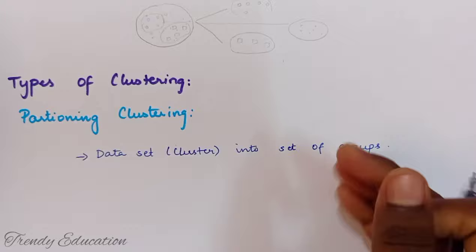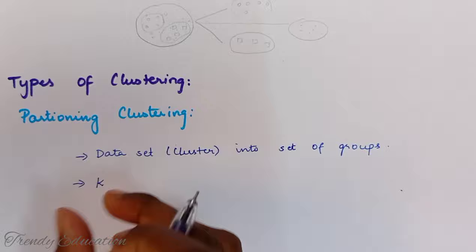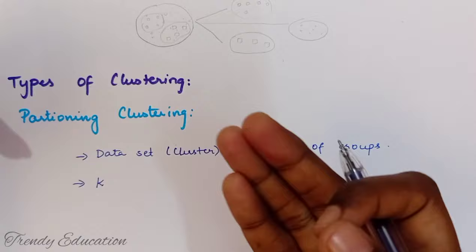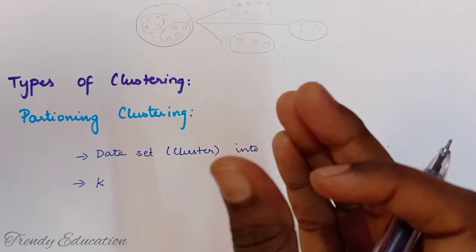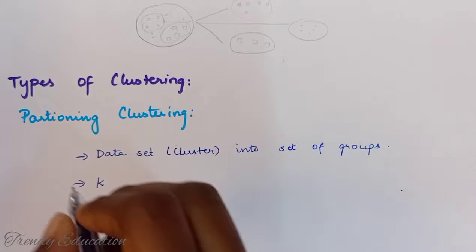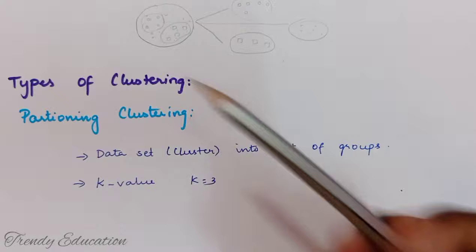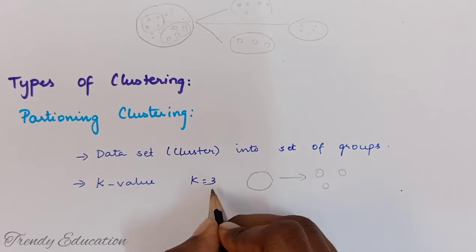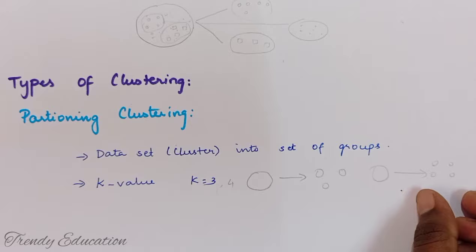We cluster the data set into a set of groups. The major step in partitioning clustering is something called k, which is the number of clusters. We have to pre-specify the k value before the data is going to be processed — that is, before clustering starts. When I give k equal to 3, the total data objects are classified into 3 clusters; when I give k equal to 4, the data is clustered into 4 groups.